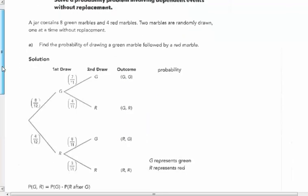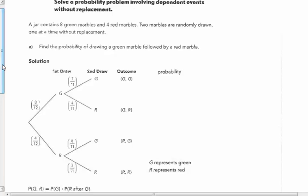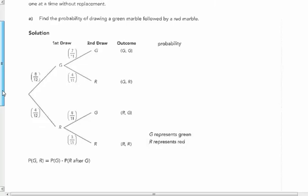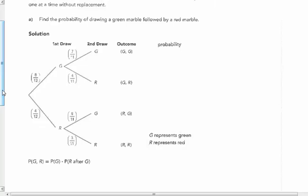Solve a probability problem involving dependent events without replacing it. You're not picking a green marble and then putting it back in the jar. You're picking a green marble and keeping it out. If you start with eight green marbles and four red marbles, two marbles are randomly drawn one at a time without replacing it. Find the probability of drawing a green marble followed by a red marble. Green is eight out of twelve and red is four out of twelve. Once I pick a green one, I only have seven out of eleven of them left. But I do have all four of the red ones out of eleven marbles left.